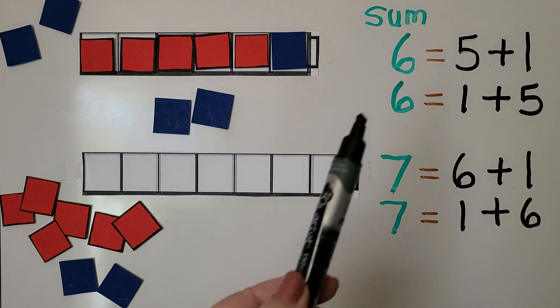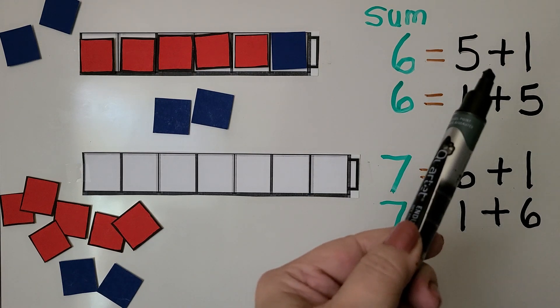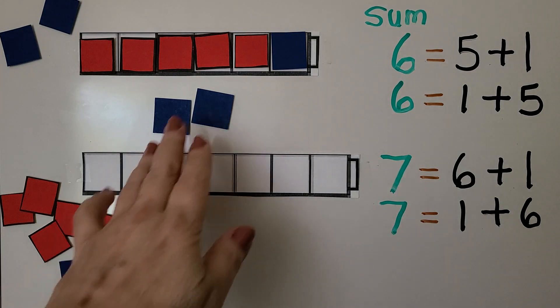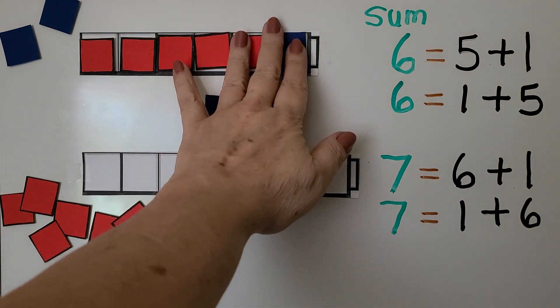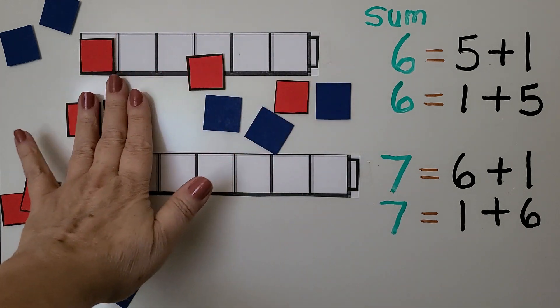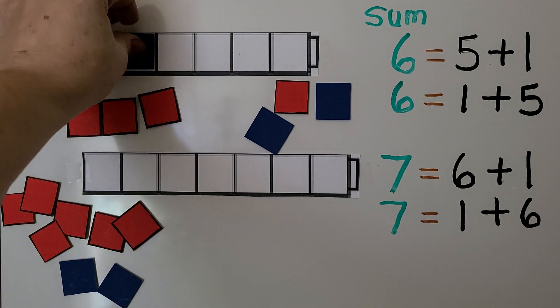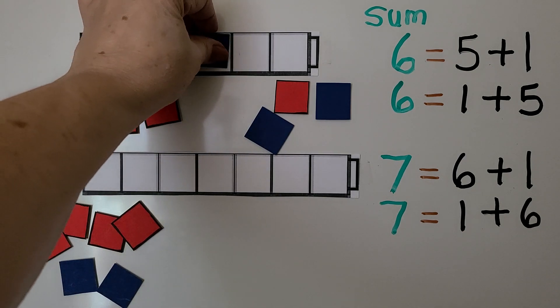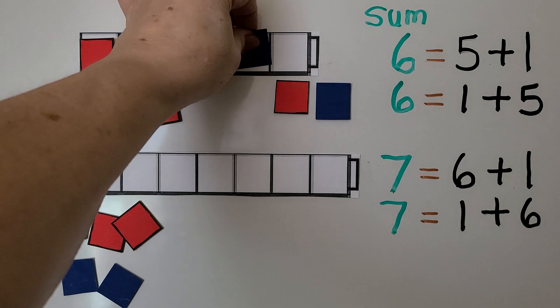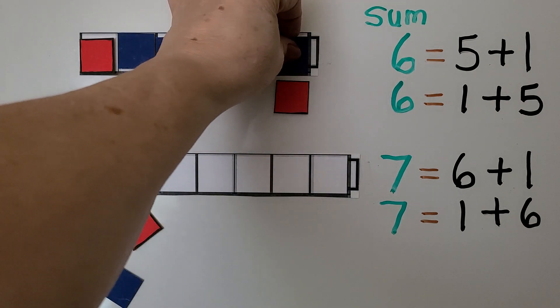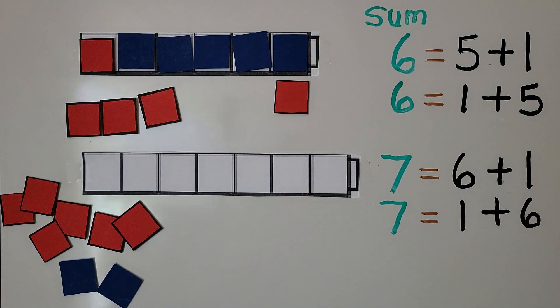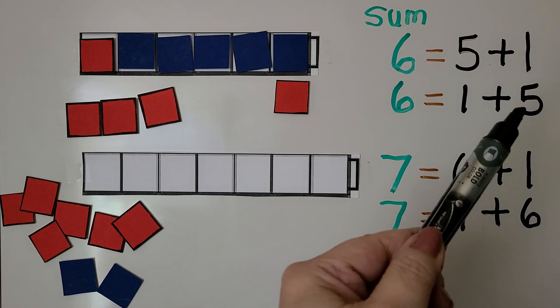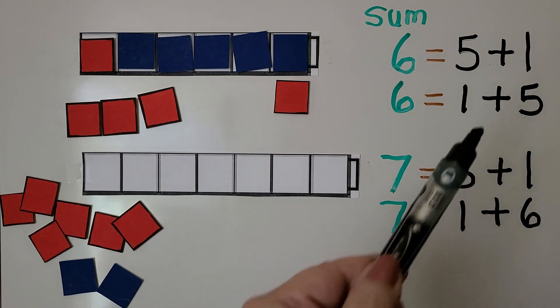6 is equal to 5 plus 1 more. We can also show this cube train with 6 cubes as 1 red one and 1, 2, 3, 4, 5 blue ones. 6 is equal to 1 plus 5. We just switched around the numbers, didn't we?